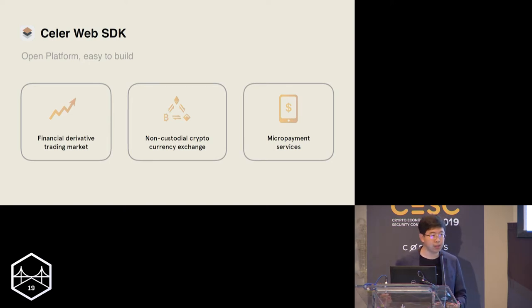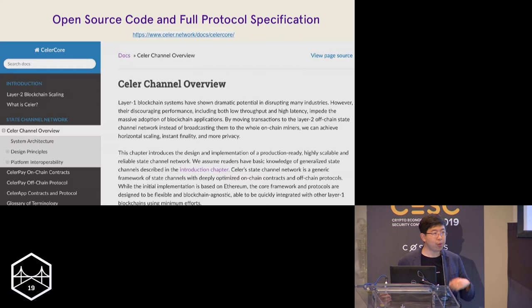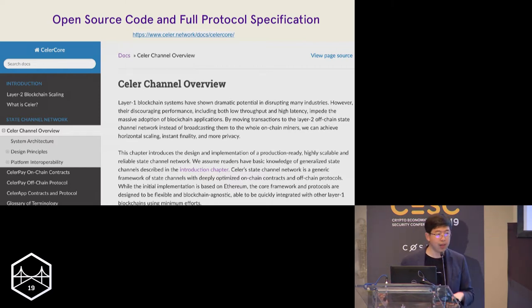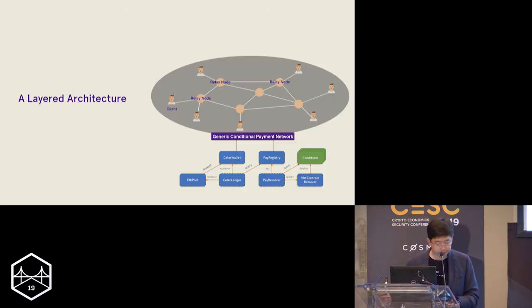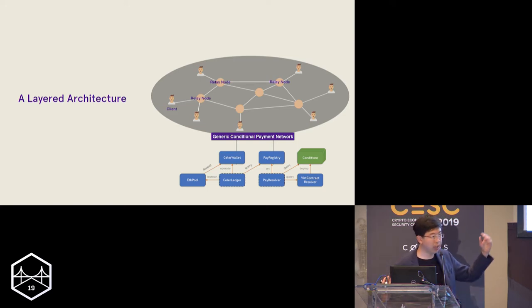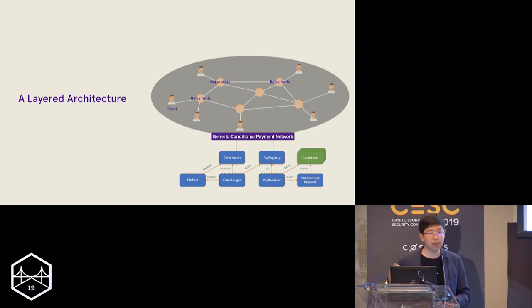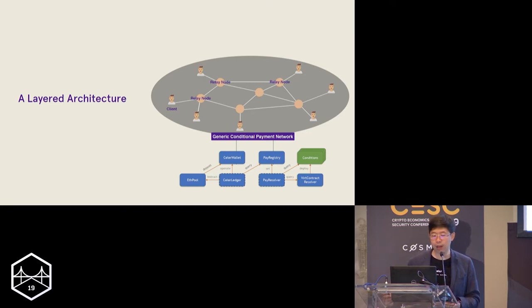Very recently we open sourced the full protocol specification of Celer network. This is the first and only open source, very detailed specification of how a generalized state channel network runs. In the following talk I will walk through the entire specification in terms of how we architect the Celer network and what are some of the key design principles to achieve a high performance and production-grade layer two scaling architecture.